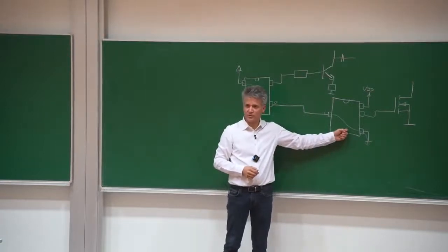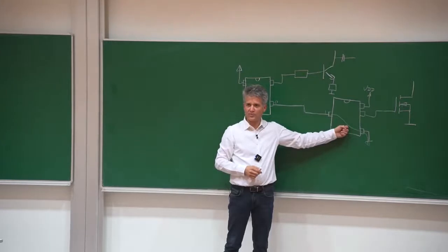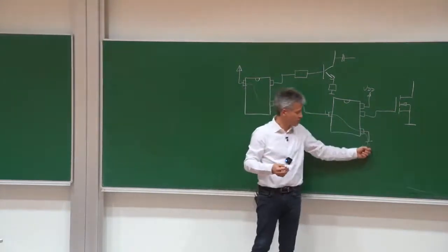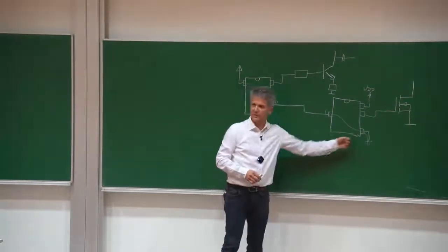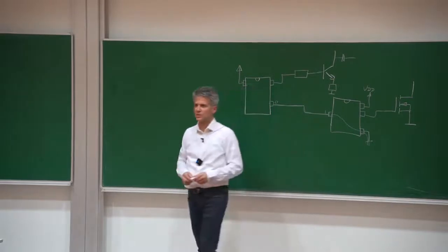But usually we are not drawing in the schematic the path where the current is flowing back. Because we suppose that the current is flowing to ground anyway and it's in ground. So we do not care where the current is flowing and this is one of the biggest mistakes that we can do.